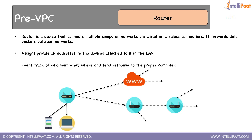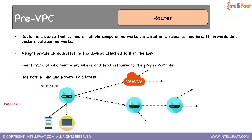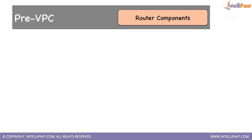Another task the router does very well is it keeps track of who sent what and where, and sends the message or response to the proper computer. Suppose this laptop sends data to another computer over the internet — the router knows this laptop sent the message. When the other machine sends a response back, the router knows it has to forward that response to this laptop. The router has both a public and a private IP address. The public IP is used only for communication with the internet; private IP is used by all devices behind the router to communicate with it.